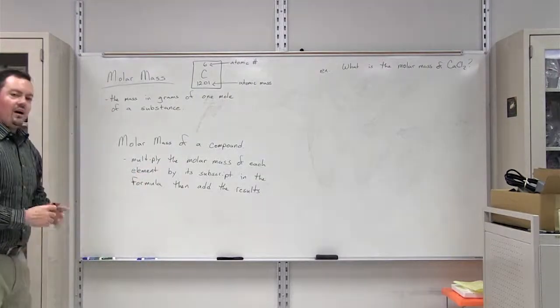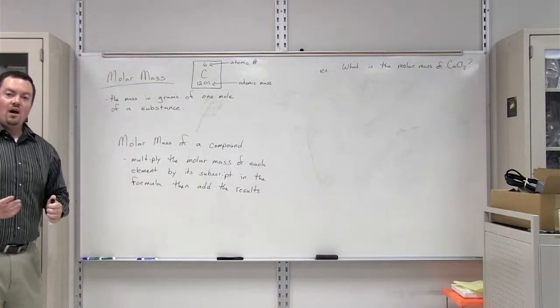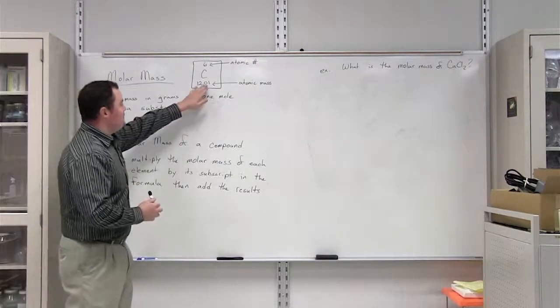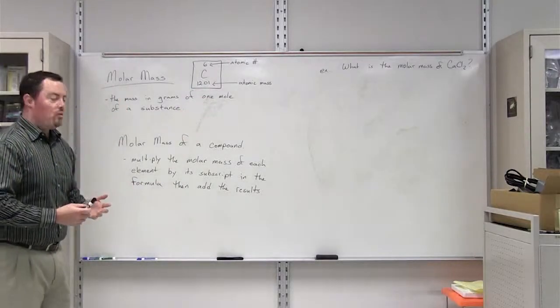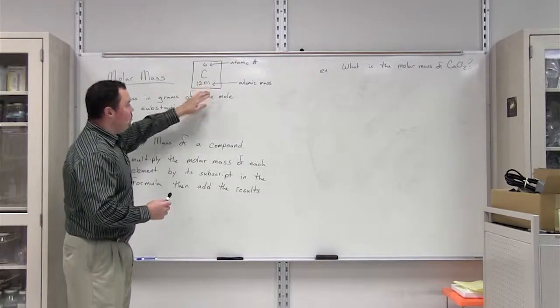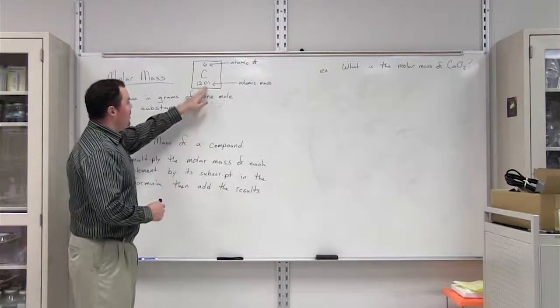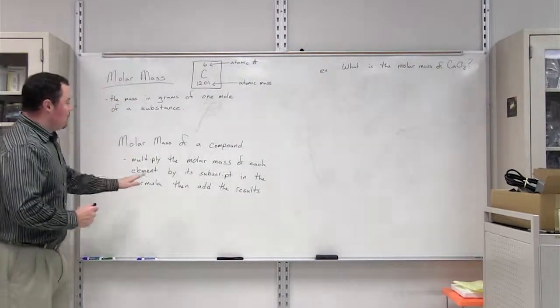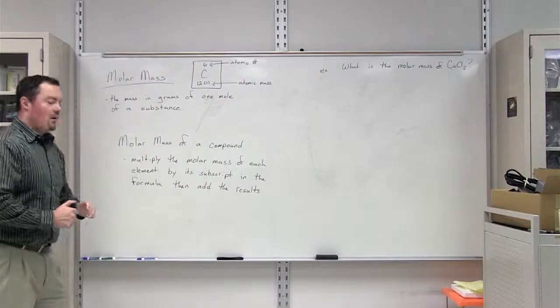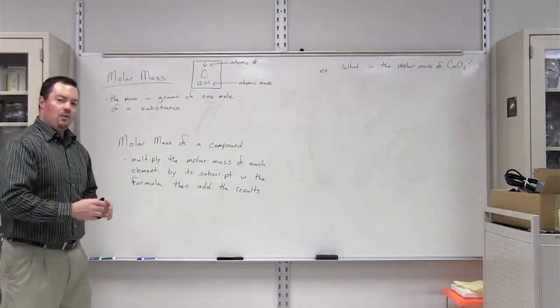Next up, we want to determine how can we find the molar mass of a compound rather than a single element. We know that if we want to determine the molar mass of an element, we just have to look at the periodic table and find that atomic mass value. But if we want to find the molar mass of a compound, we've got to take it one step further.